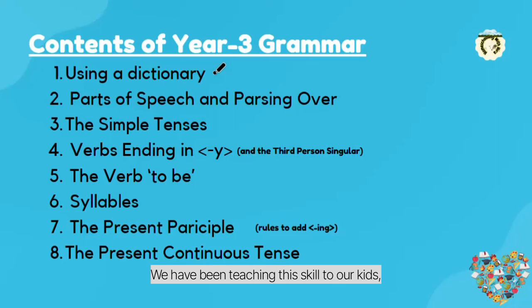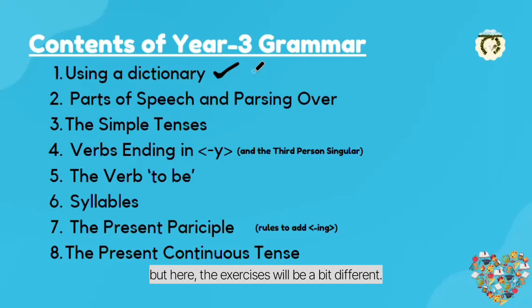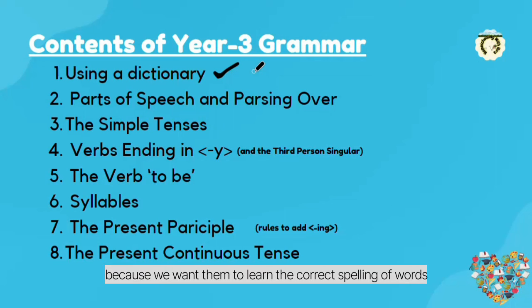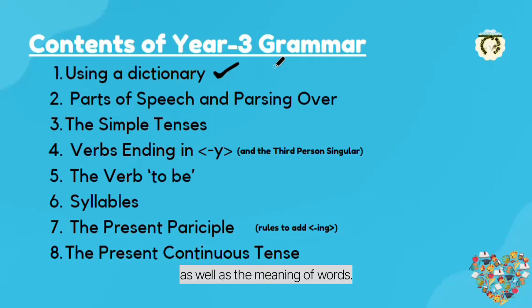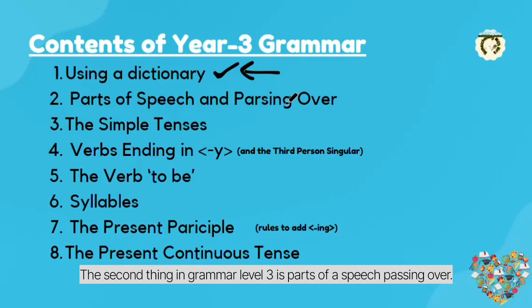The first thing with which we start year 3 grammar is using a dictionary. We have been teaching this skill even in year 1 and year 2, but here the exercises will be a bit different. We teach the use of a dictionary because we want kids to learn the correct spelling of words as well as the meaning of words. The second thing in grammar level 3 is parts of speech — parsing over.